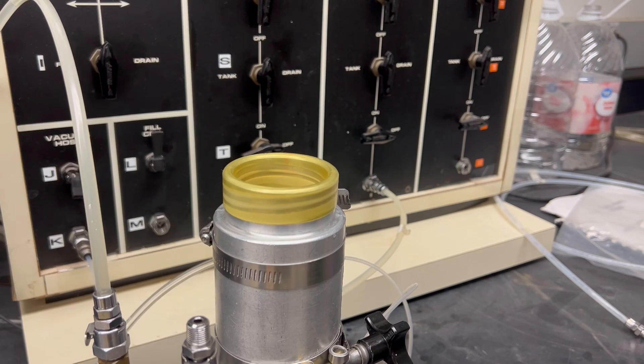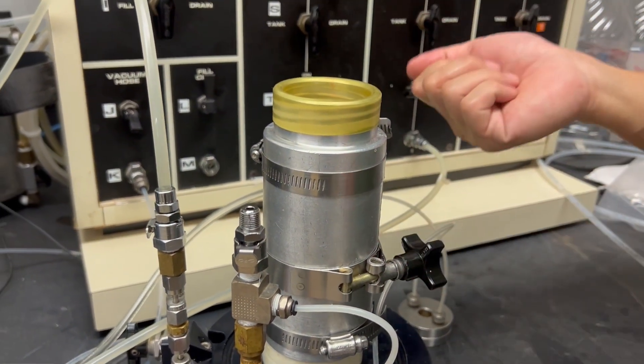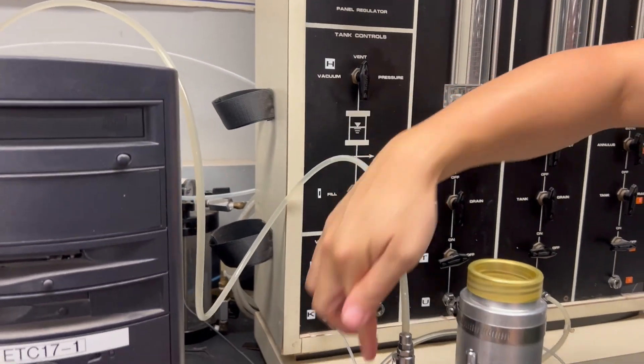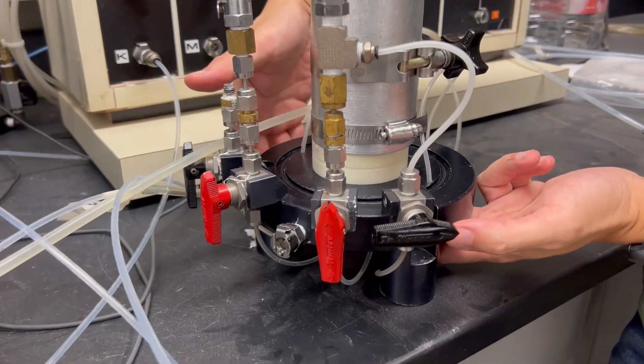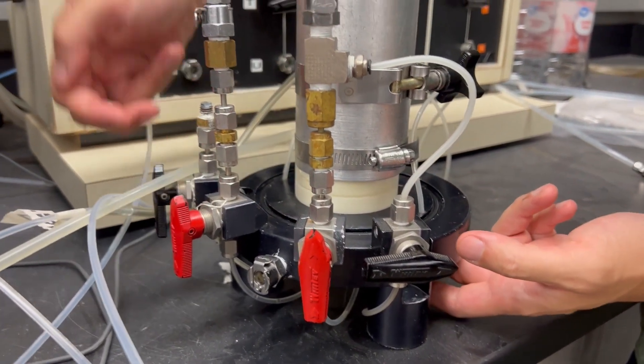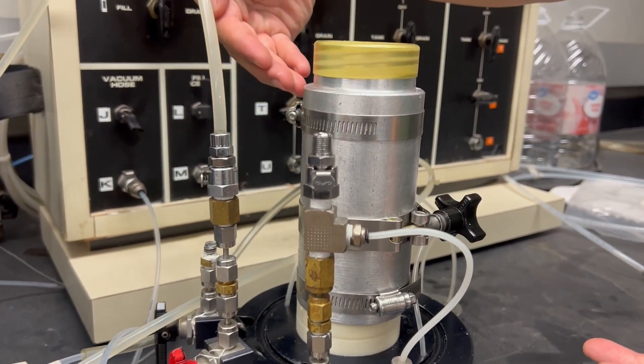And before we start, this is water permeation. So we need to fill this up with water. We will have a water line that comes in from my water source and it goes into the connections from the bottom part of the triaxial cell. So water can go through our bottom part and then fill up the whole cell.